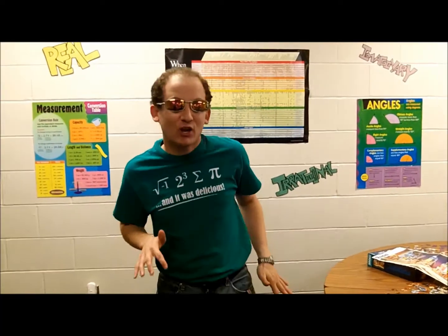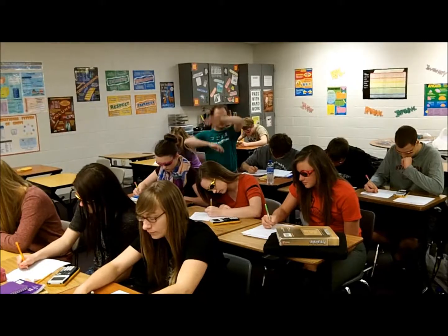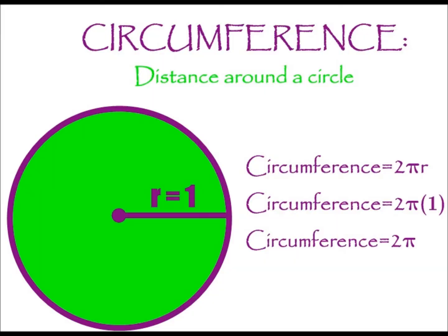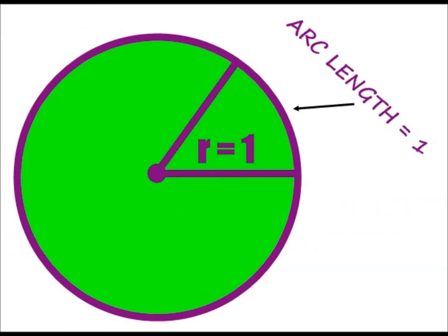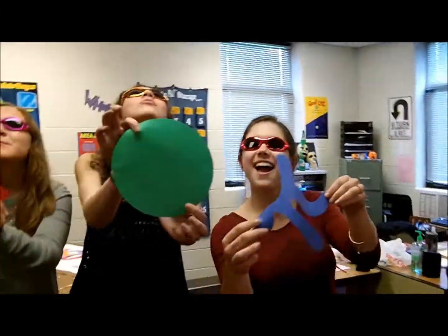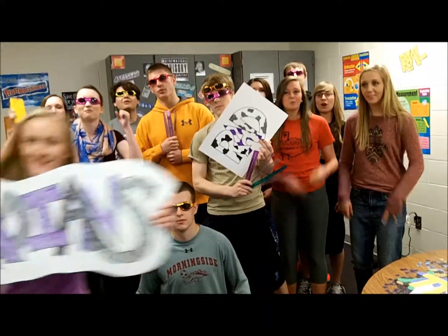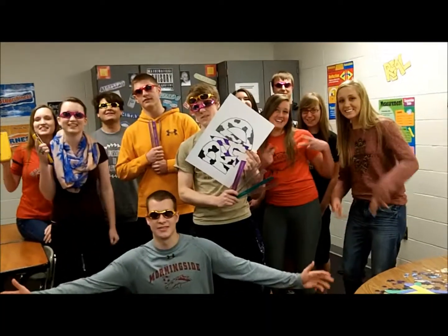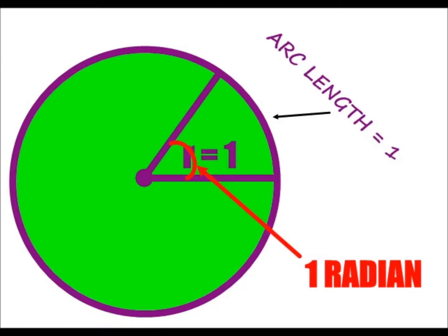Now that we've all converted, we need to give a name to the things we are turning. If we visit the circle from before, we still have a radius of one. If the arc and radius are congruent, what we have now is a new type of measurement — radian is what it's called, representing the central angle.